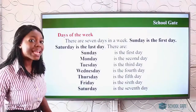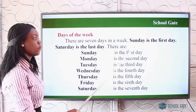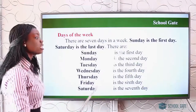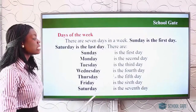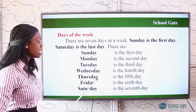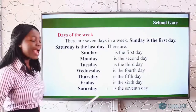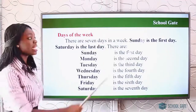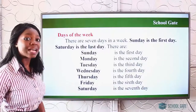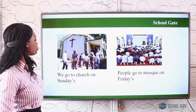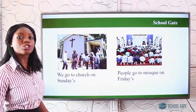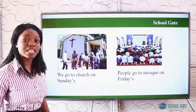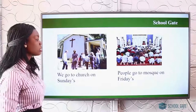So these are the seven days in a week. Sunday is the first day, Monday is the second day, Tuesday is the third day, Wednesday is the fourth day, Thursday is the fifth day, Friday is the sixth day, and Saturday is the seventh and last day. Which day do you go to church? You go to church on Sundays. People that go to mosque go on Fridays. And you go to school from Monday to Friday.